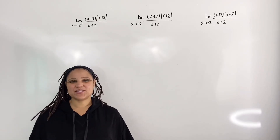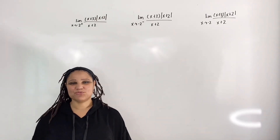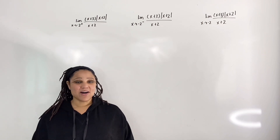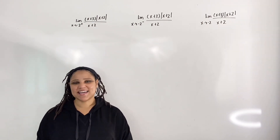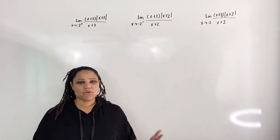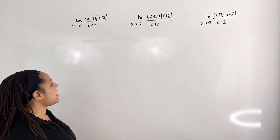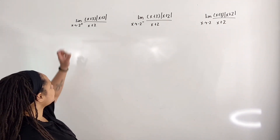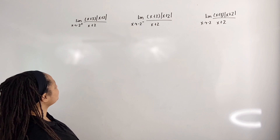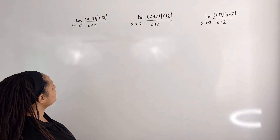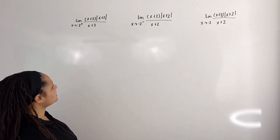In this video, we are going to evaluate left and right-hand limits, also known as one-sided limits. For our examples, we have the expression x plus 3 times the absolute value of x plus 2 all over x plus 2.